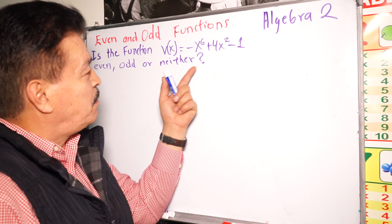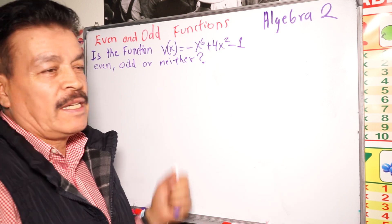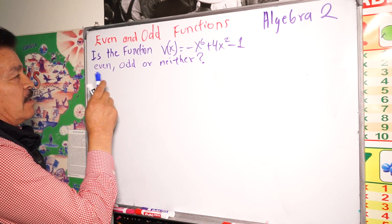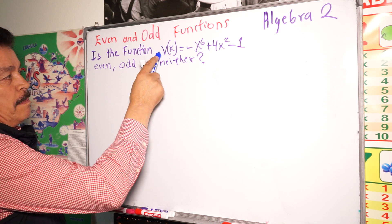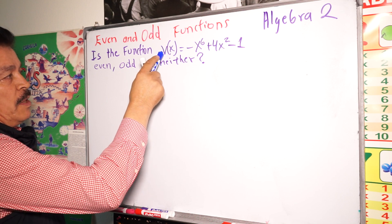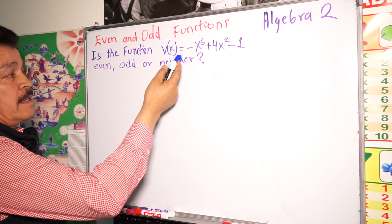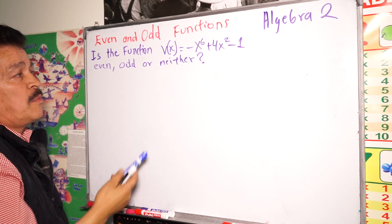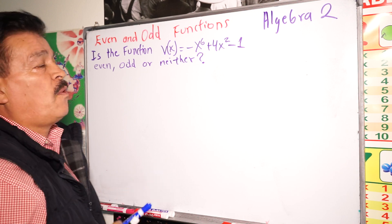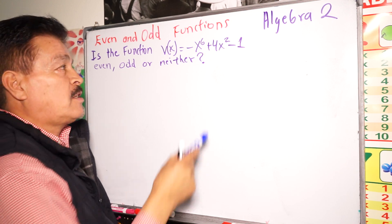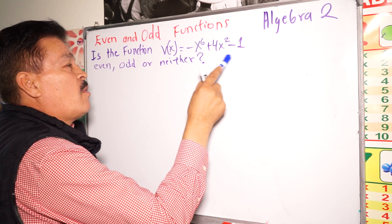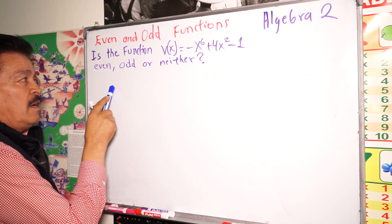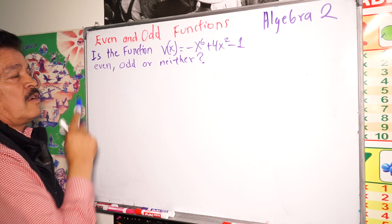We have one problem here, one example. Is the function f(x) equals negative x to the 6th power plus 4x to the 2nd power minus 1 — even, odd, or neither?